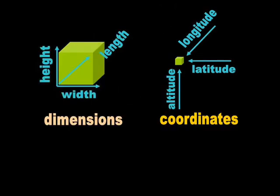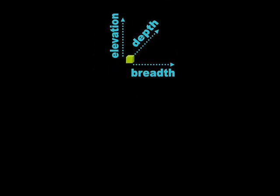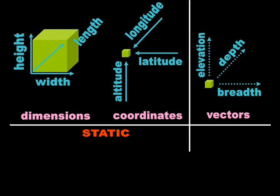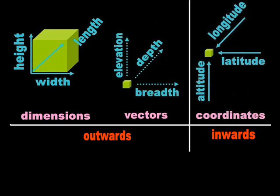Dimensions and coordinates are conceptually static. The three vectors are known as depth, breadth, and elevation. They specify the mutually orthogonal directions in which an object may move. Vectors are dynamic, and like dimensions also point outwards from the object under study.